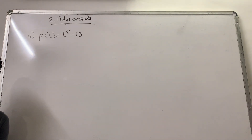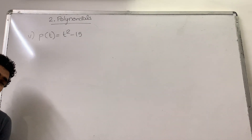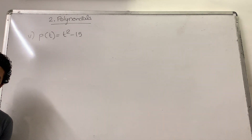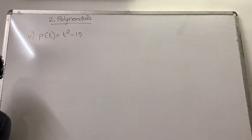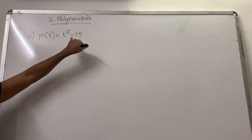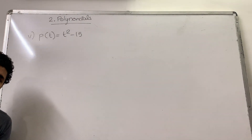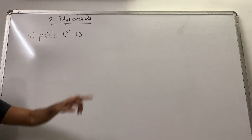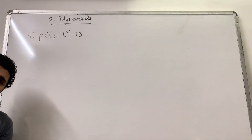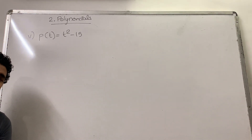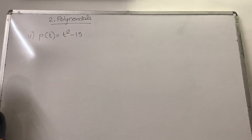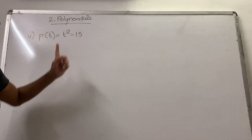One term is missing. In the fourth question, the constant term was missing. If the constant term is missing, you factorize by taking common. Now if the degree 1 term is missing — we have the degree 2 term and the constant term, but not the degree 1 term — you will always have a minus sign. Why? Because if you have a plus sign, you cannot find zeros; that polynomial will never have a zero. So they will always give you a minus sign.